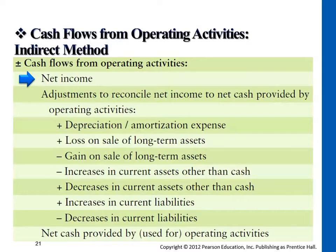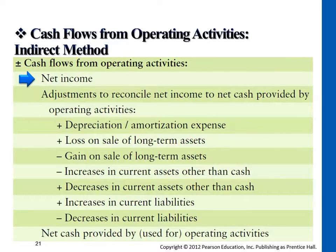In the operating activity section — this is just looking at the operating section, the first part of the statement of cash flow — we will start from net income and then do some adjustments to reconcile net income to the cash provided in this activity section. What this means is we want to tease out the part that has nothing to do with cash inflow or cash outflow. That's what is meant by the adjustments line.